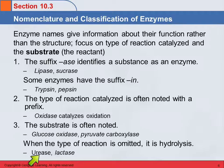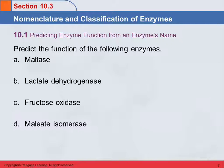If the type of reaction is omitted — as in urease and lactase — it's assumed to be hydrolysis. Urease acts on urea, lactase acts on lactose, and since no reaction type is specified, we assume hydrolysis. As an exercise: maltase — what does it act on? It acts on maltose. Does it indicate a reaction type? No. So we assume it catalyzes the hydrolysis of maltose.